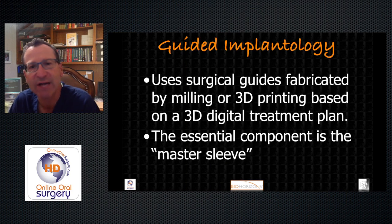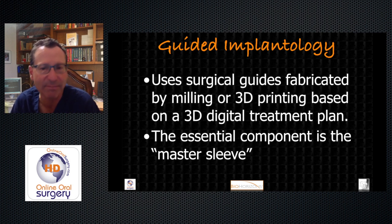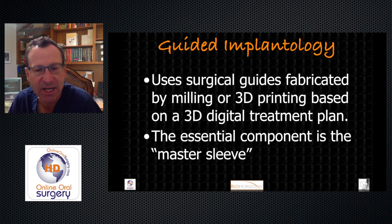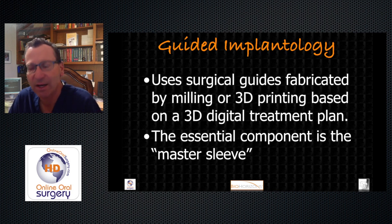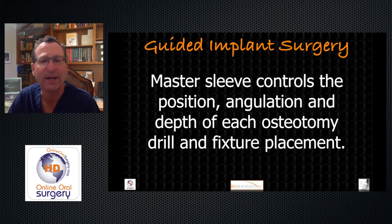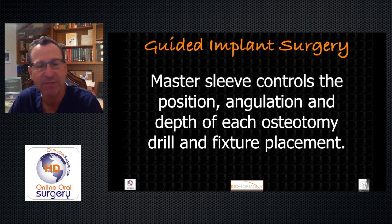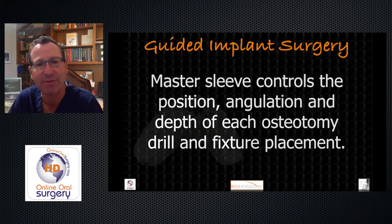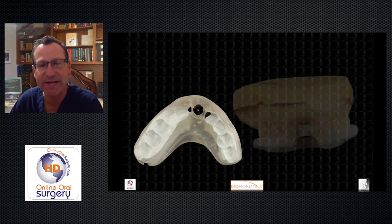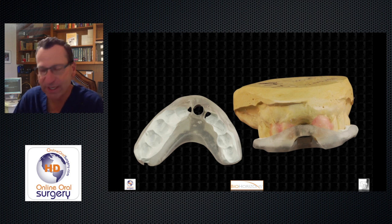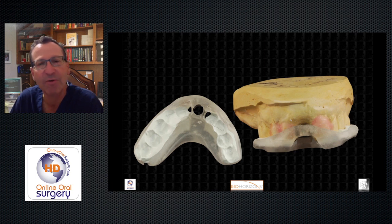Surgical guides for guided implant surgery can be made in different ways — either by milling from a solid block of acrylic or created de novo by 3D printing — but all the information comes from the 3D imaging: the combination of CAD/CAM data and cone beam data. The essential part of this whole process is the master sleeve, because that controls the position, angulation, and depth of each osteotomy, and in a fully guided system, it also controls the placement of that implant fixture. Here is what our surgical guide looks like with the guide sleeve within it.